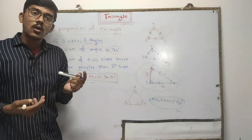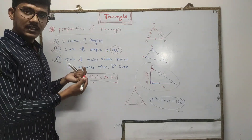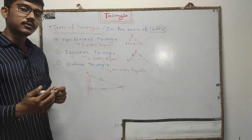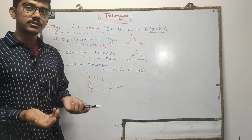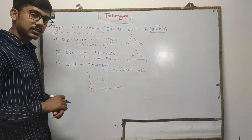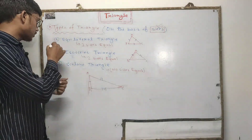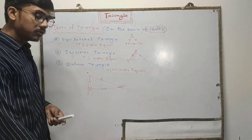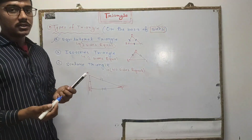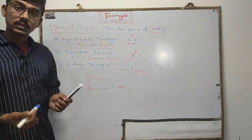Now let's understand the types of triangle — on the basis of sides and on the basis of angles. Types of triangle on the basis of sides: there are three types — equilateral triangle, isosceles triangle, and scalene triangle. An equilateral triangle is a triangle in which all sides are equal.